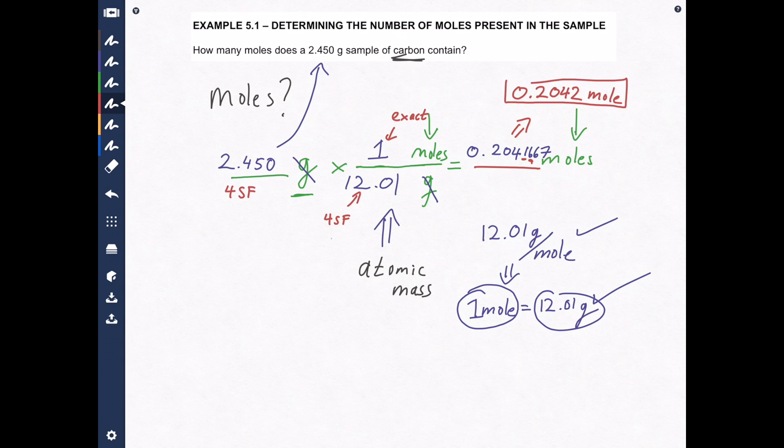And I like to put squares or a rectangle around my final answers to make it clearer to the grader what my answer is. Alright. And that is how you convert grams to moles using atomic mass that's found on the periodic table.